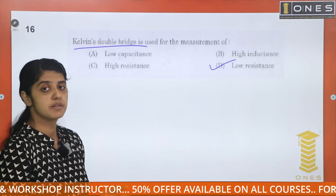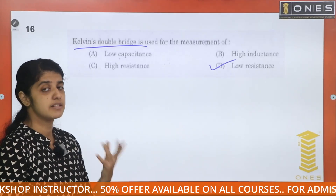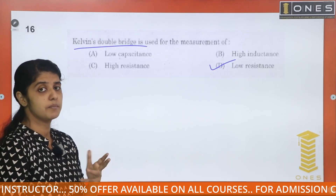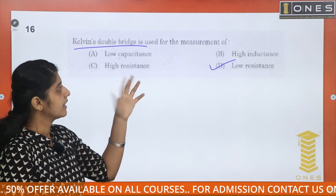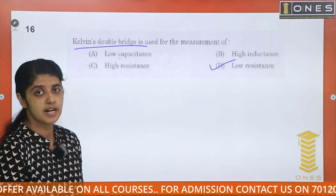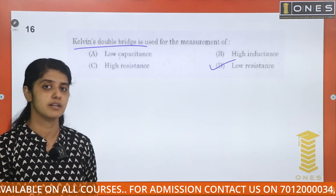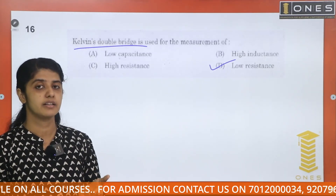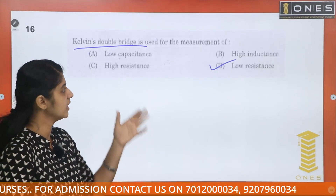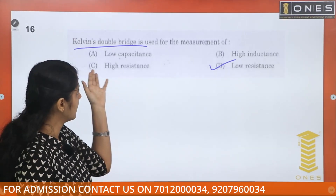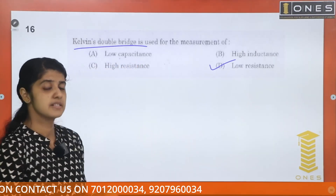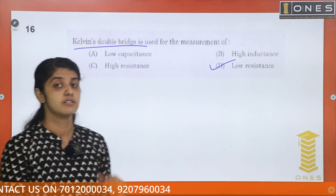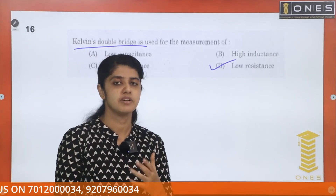Medium resistance measurement uses the Wheatstone bridge. High resistance measurement uses the Megger. Capacitance measurement uses the Schering's bridge.